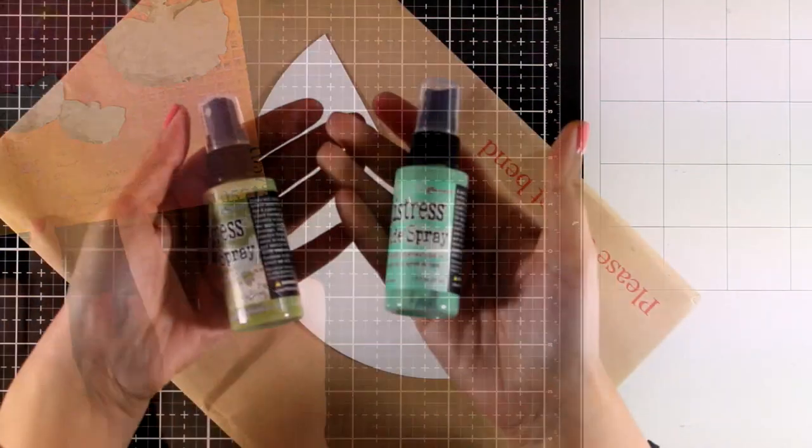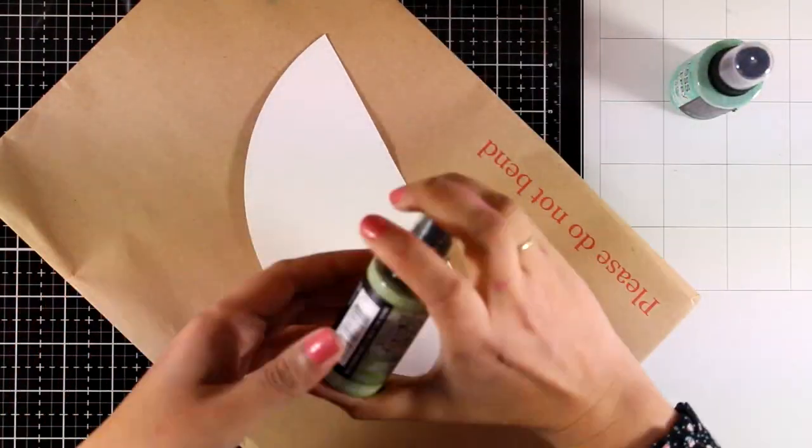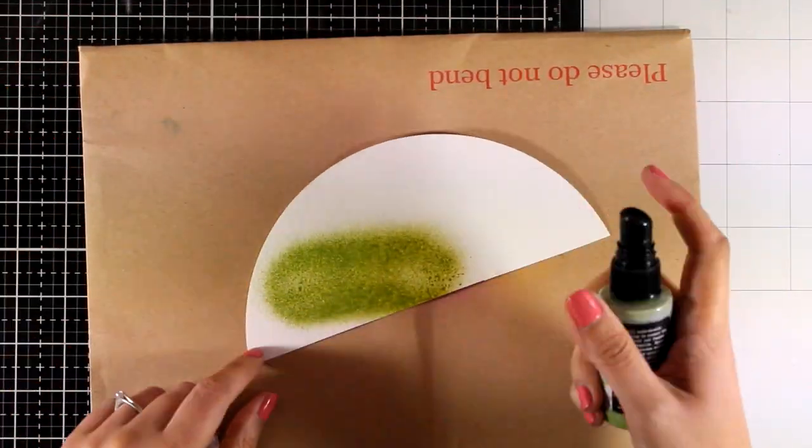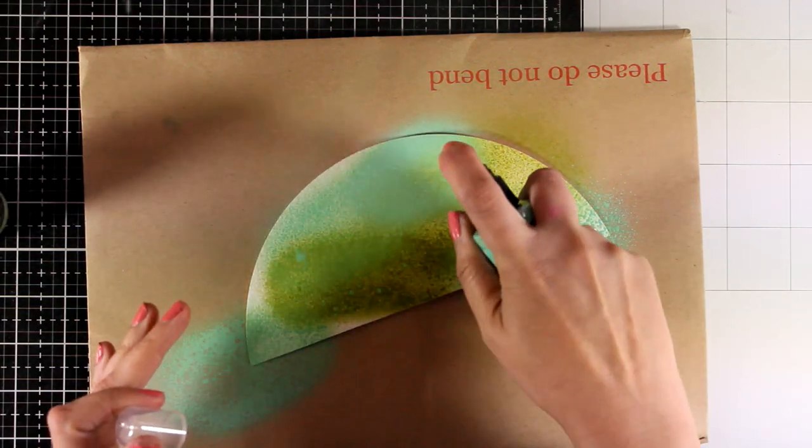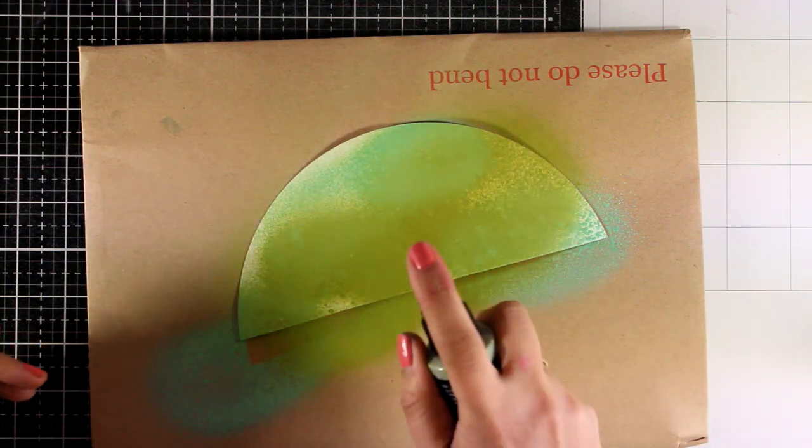Now I'm going to create some stems. To get the same look as the background, I'm going to use again my Distress Oxide sprays. I'm using two colors here, these are Peeled Paint and Cracked Pistachio. So I'm just mixing the colors on a scrap piece of paper, then I'm going to heat set it and I'm going to cut out some strips.